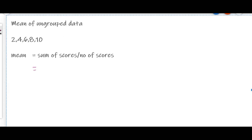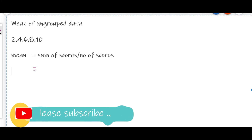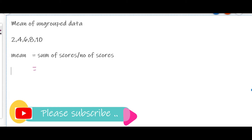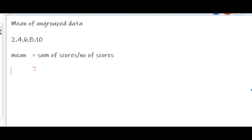Now let us take a simple example. Suppose in a class of 5 students they have got marks like 2, 4, 6, 8, 10 in a test out of 10 marks. Now let us find out the arithmetic mean of these scores. We know mean is equal to sum of scores divided by number of scores, so we are going to add these scores now.